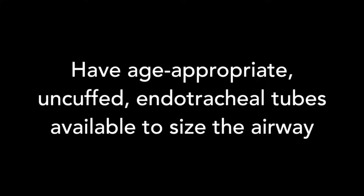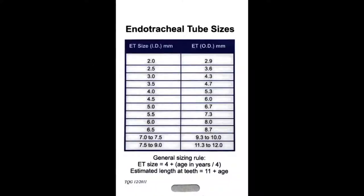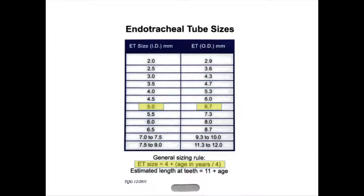During the airway evaluation, you must size the airway to make sure that it is appropriate for the age of the patient. Using an airway card that has the normal values for different size endotracheal tubes is handy. There is a formula for determining the appropriate size endotracheal tube for the age of a patient, which can then be used to pick the correct endotracheal tube and size the airway.